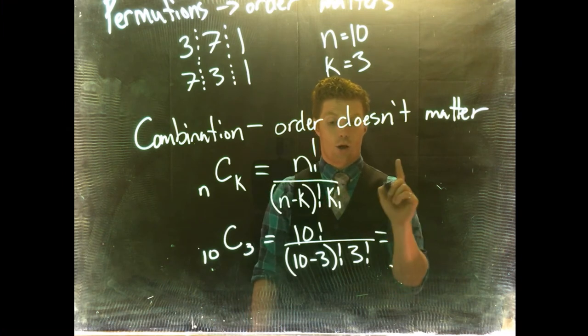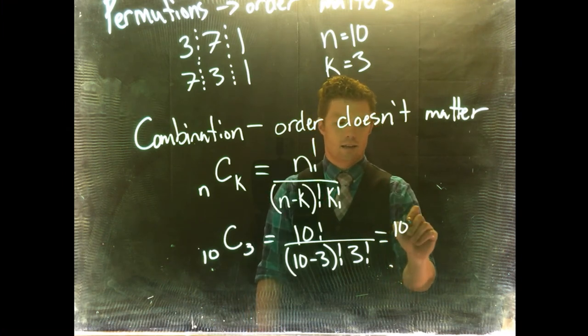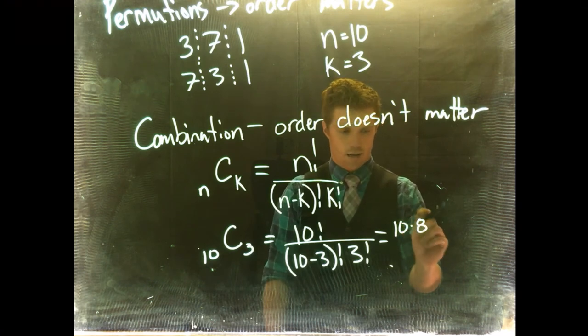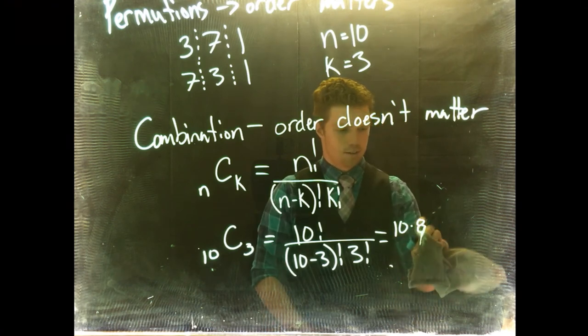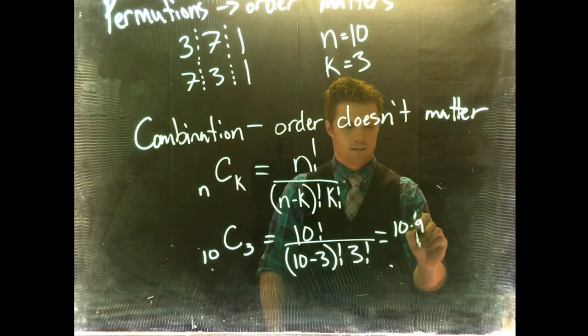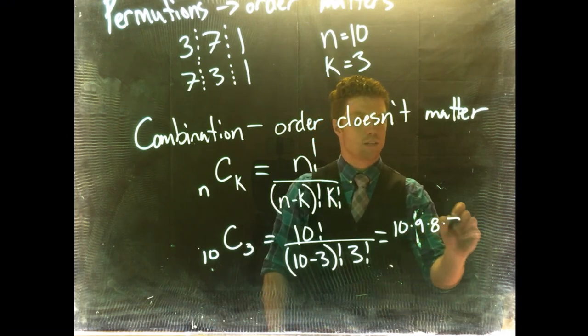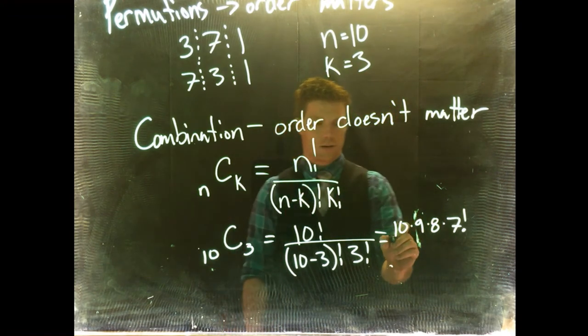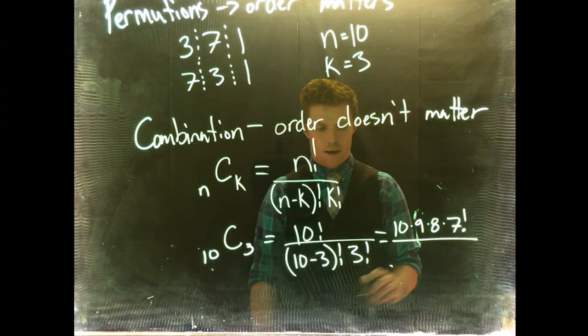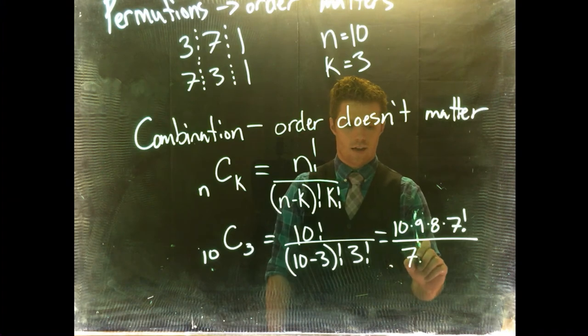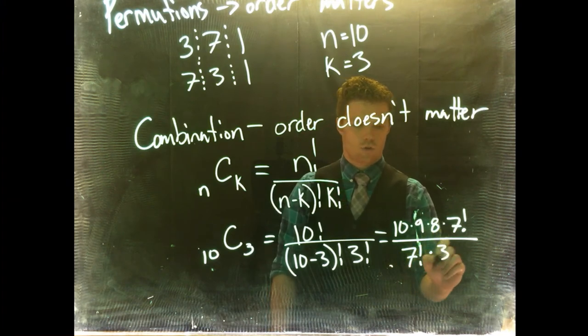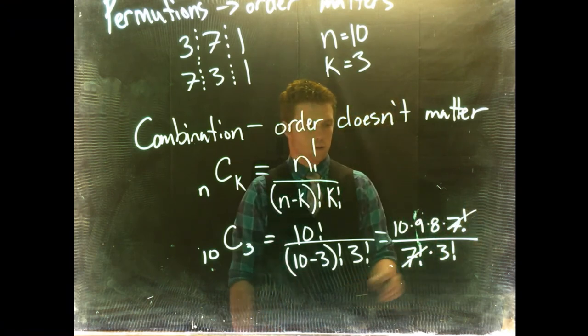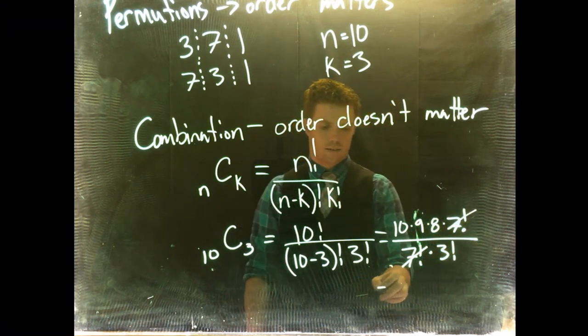What's cool is that we can actually simplify this down pretty quickly because we can write 10 factorial also as 10 times 9 times 8 times 7 factorial. That's going to be super handy for us. Then we can divide by 7 factorial times 3 factorial. Then we can cross those guys out.